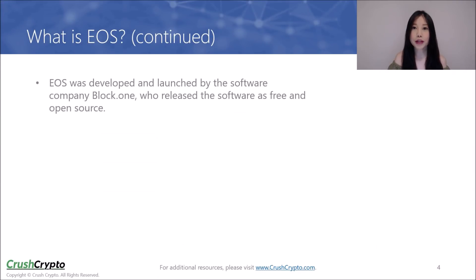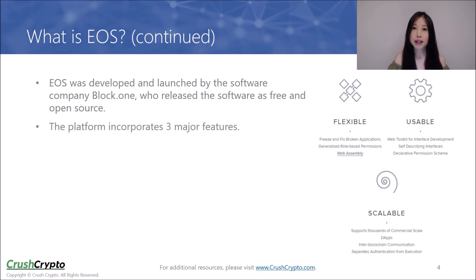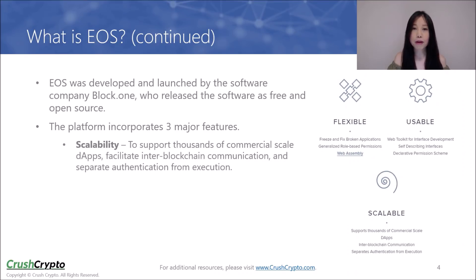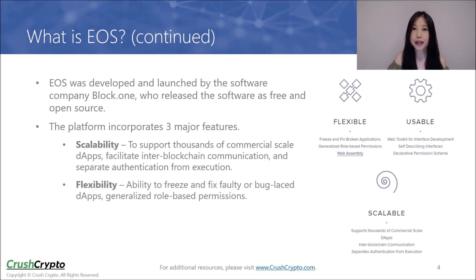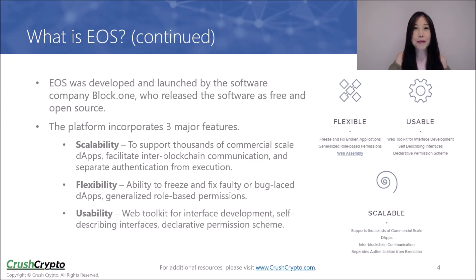EOS was developed and launched by a software company known as BlockOne. They released the software as free and open source. BlockOne built the EOS platform to incorporate three major features: scalability, flexibility, and usability. The platform aims to be scalable by supporting thousands of commercial-scale dApps, facilitating inter-blockchain communication, and separating authentication from execution. It aims to be flexible through the ability to freeze and fix faulty or bug-laced dApps and incorporating generalized role-based permissions. And it aims to be usable by providing a web toolkit for interface development, self-describing interfaces, and a declarative permission scheme.